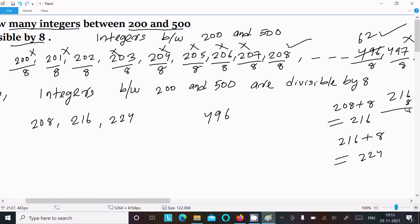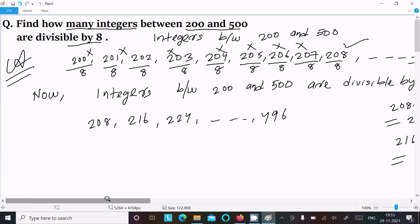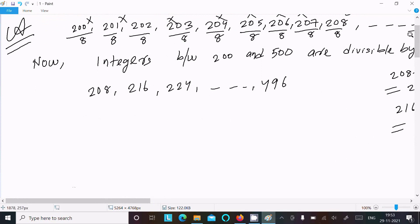Okay, so the next is here 224. 216 plus 8, here 8 plus 6 is 14, 1 plus 1, 222. Like this, this continues.